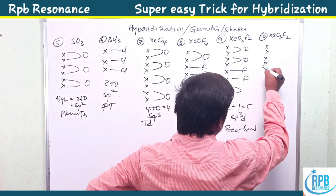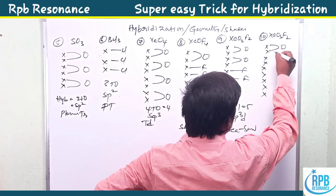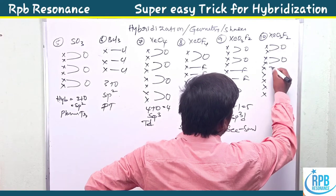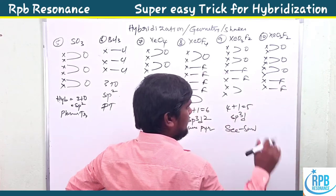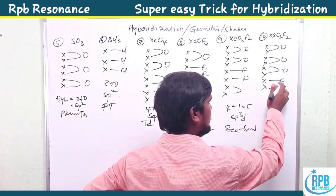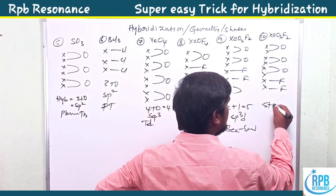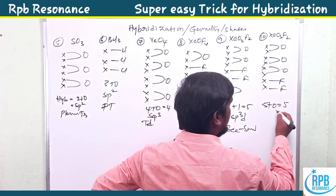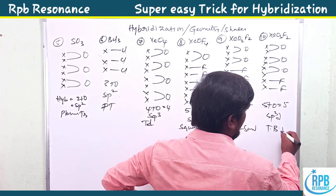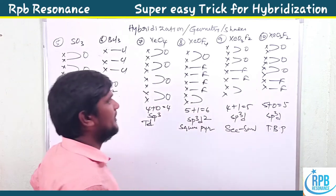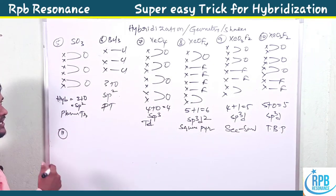For XeO3F2, xenon group eight with three oxygens and two fluorines gives five sigma bonds plus zero lone pairs: five plus zero equals five — sp3d hybridization, trigonal bipyramidal shape.